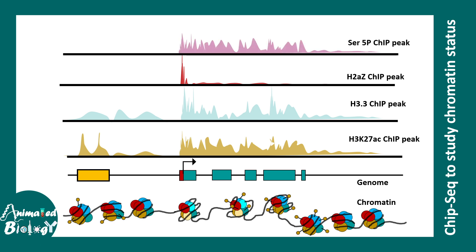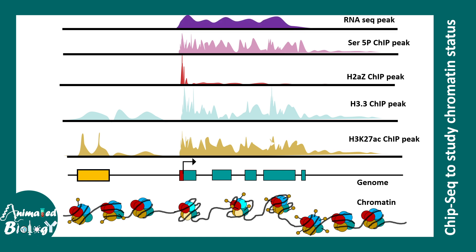Also, serine 5-phosphate modification is found on the RNA polymerase, which is an indicator of an active gene. If one can detect serine 5-phosphate associated ChIP peaks in that location and compare all of these together, then we can say that this particular gene is actively transcribing. One can even compare this with an RNA-seq peak to really understand whether mRNAs are produced or not. This is how we can combine different ChIP-seq experiments against different histone components to get a deeper understanding about transcriptional regulation.